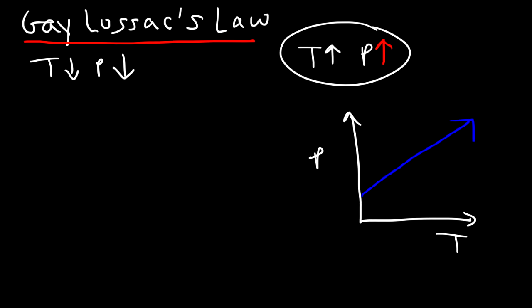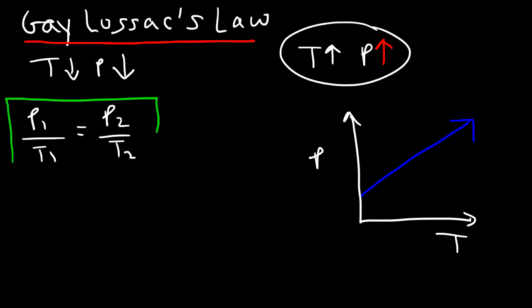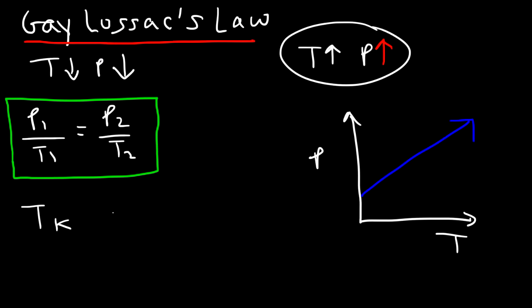The equation that goes with Gay-Lussac's Law is: P₁ over T₁ is equal to P₂ over T₂. Pressure must be in the same units — both in torr, atm, kilopascals, psi, or millimeters of mercury — they just have to match. Temperature must be in Kelvin, not Celsius. If you're given a Celsius temperature, convert it to Kelvin by adding 273.